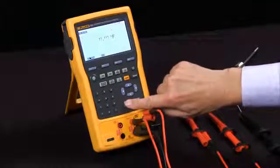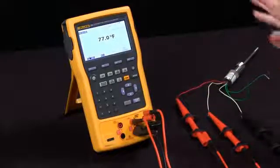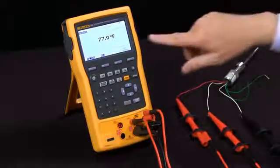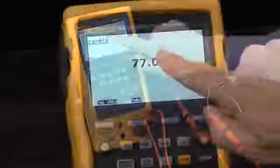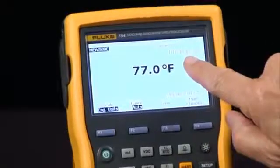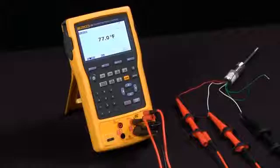I select three wire and it goes in the measure screen and it measures the RTD that's measuring room temperature here at 77 degrees Fahrenheit. You see on the screen it says three wire RTD Platinum 100 ohm 385. That's how we measure an RTD.